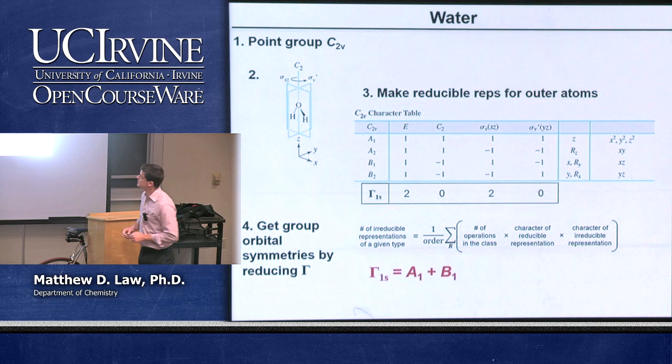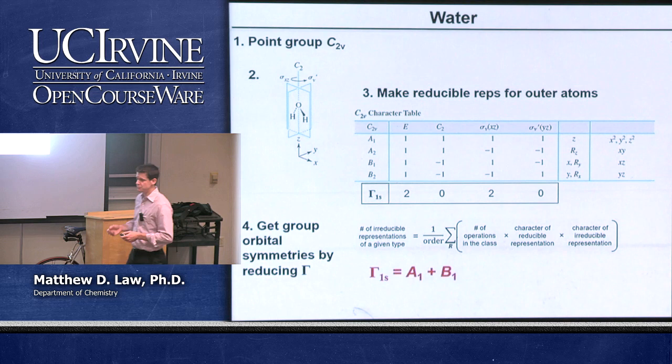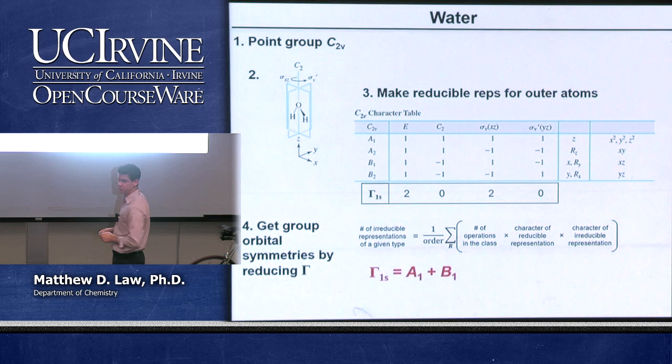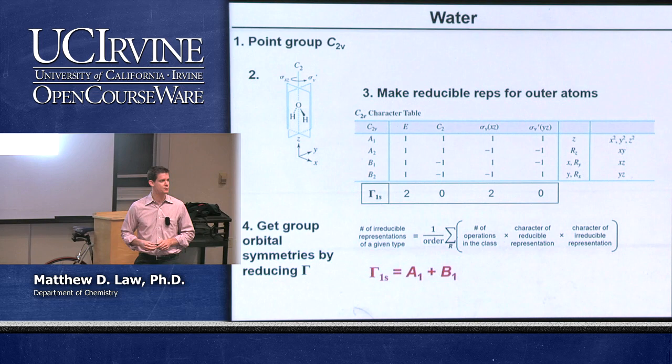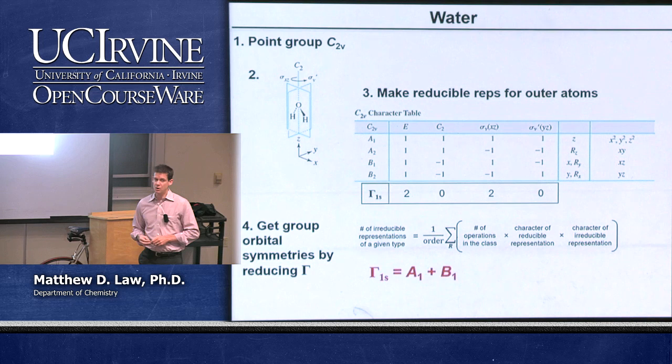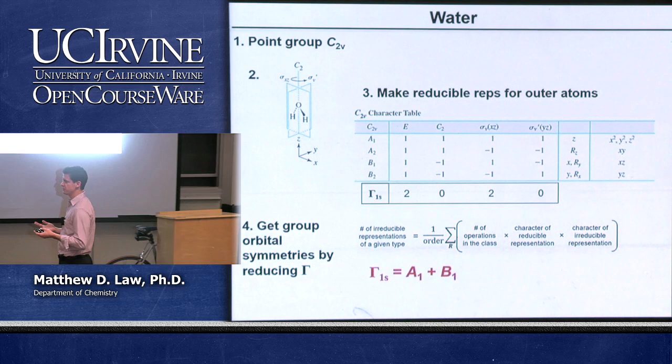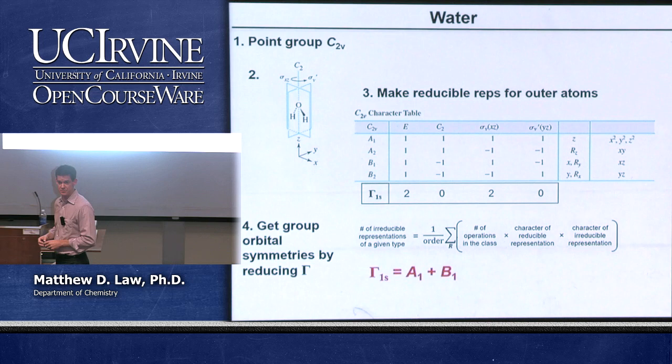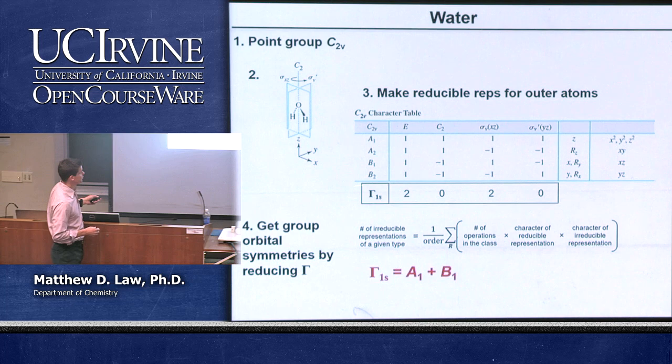What we left with last time was our description of water, using the full formalized approach. We start by assigning the point group of water — that's always the first step — and assigning the Cartesian coordinates. We always choose the z-axis along the principal rotational axis. To understand the molecular orbital diagram, we look at group orbitals formed from the 1s orbitals of hydrogens and pair those with the 2s and 2p orbitals of oxygen.